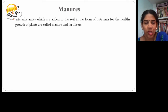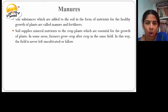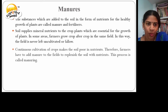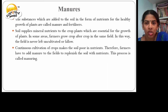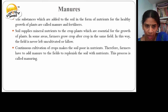Manures. The substances which are added to the soil in the form of nutrients for the healthy growth of plants are called manures and fertilizers. Soil supplies mineral nutrients to the crop plants which are essential for their growth. In some areas, farmers grow crop after crop in the same field, and the field is never left uncultivated. Continuous cultivation of crops makes the soil poor in nutrients. Therefore, farmers have to add manures to the fields to replenish the soil with nutrients. This process is called manuring.